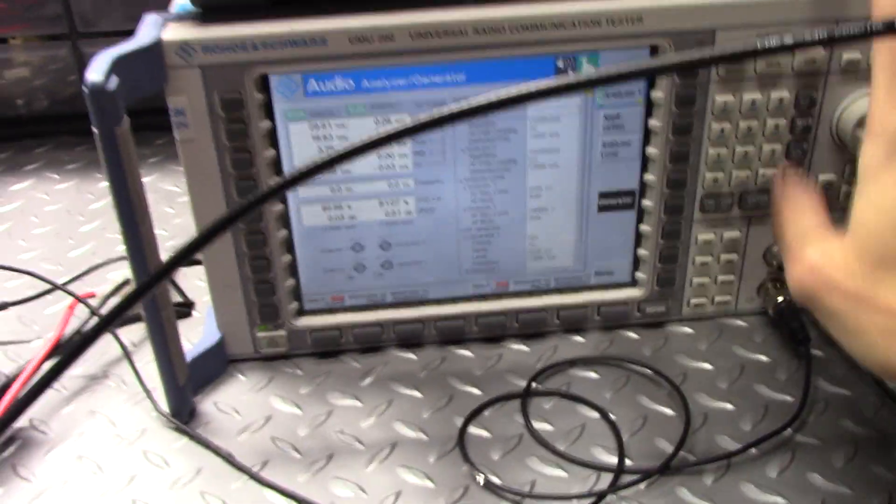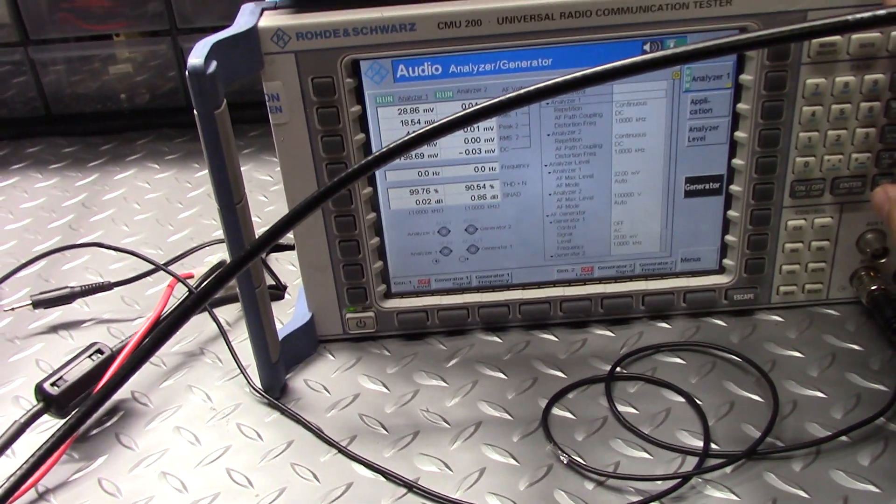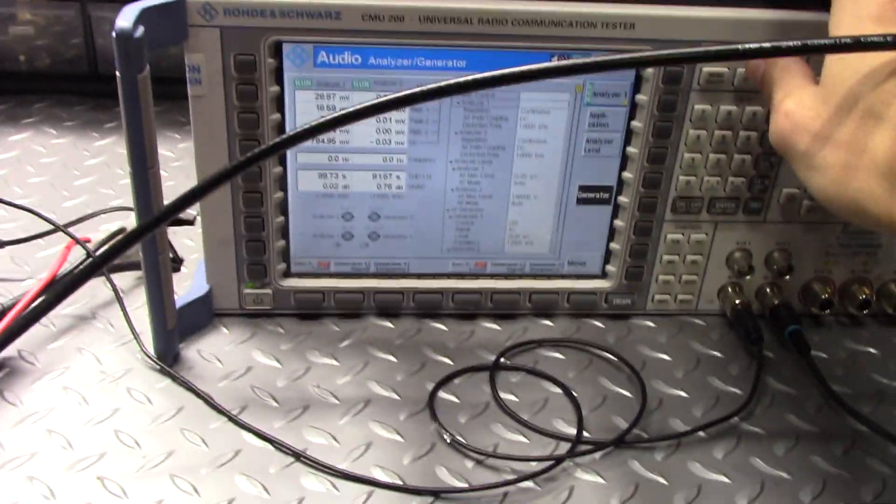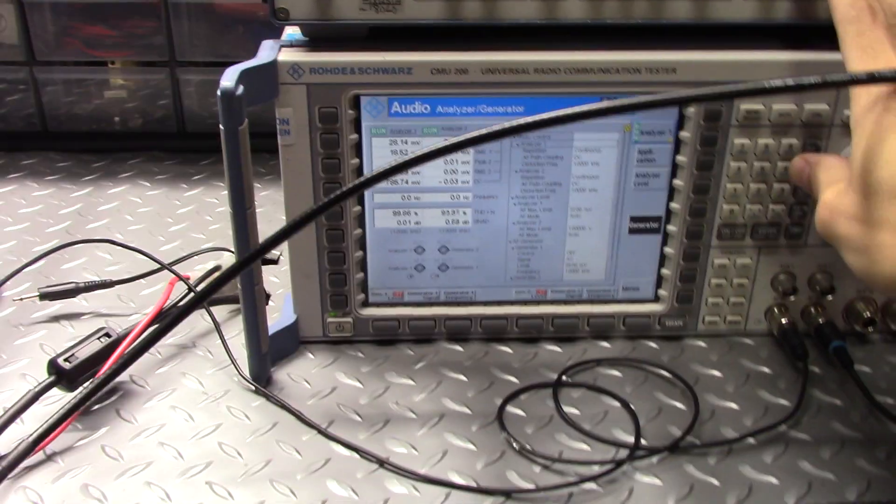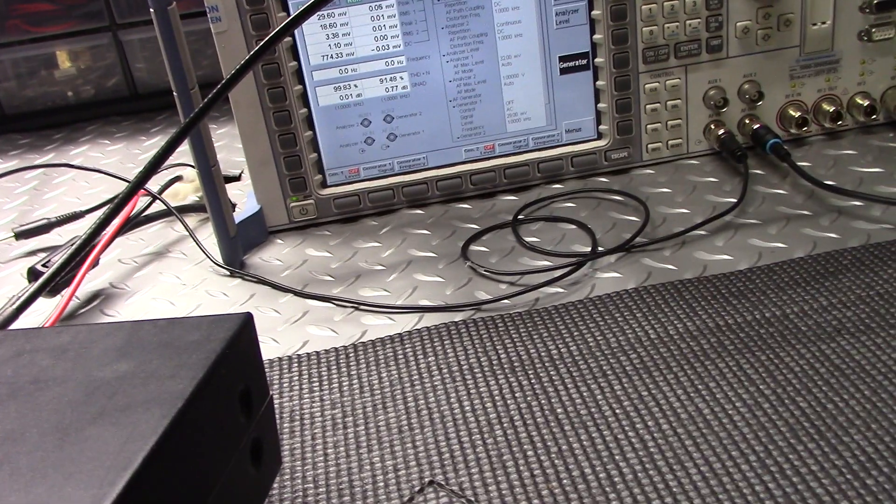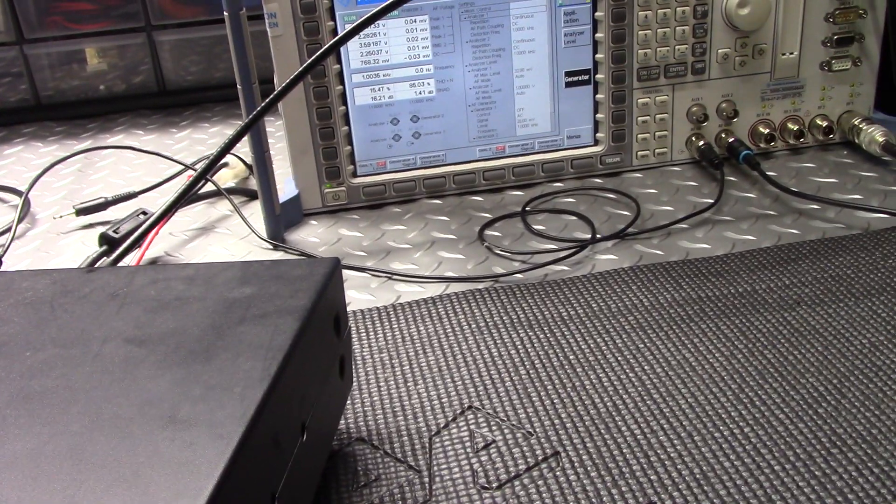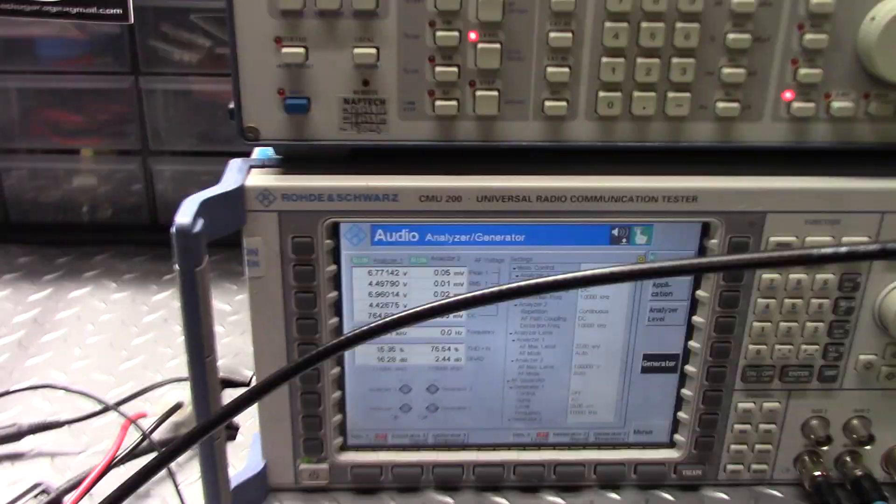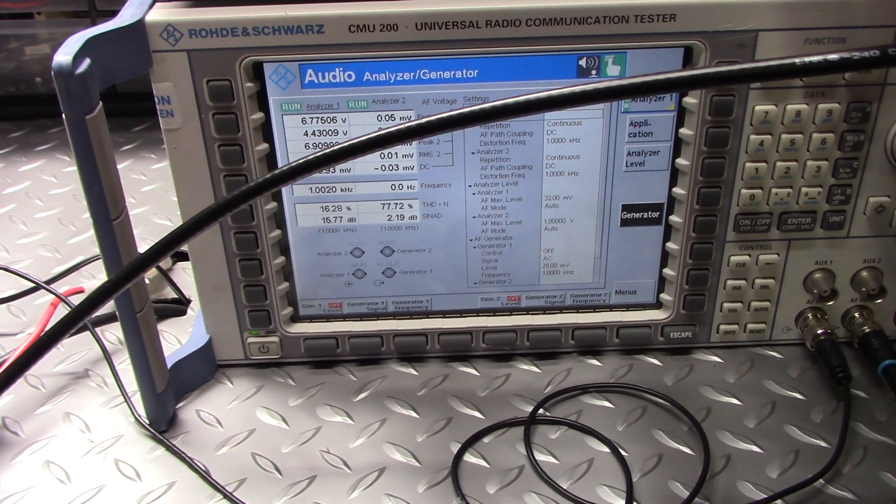1000 Hz, 30% modulation, 27.205. Alright, start dialing her in. And the volume down, that's okay. Now we're better, that's better. Okay, let's see where she gives us her 12 at, left column there.